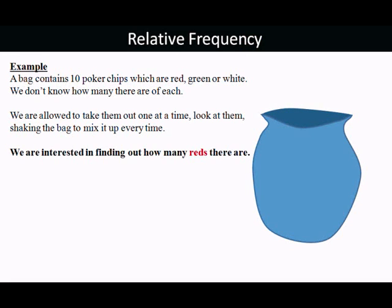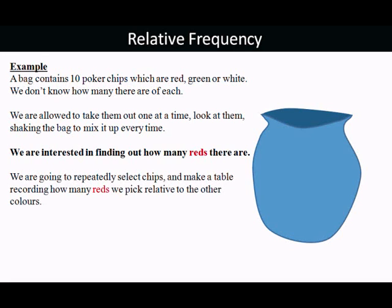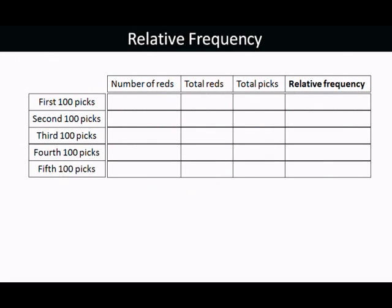And you can gather information that way. So say we're interested in finding out how many reds there are. So you're going to repeatedly select chips and then make a table recording how many reds we pick compared to how many of the other colours. So in the first 100 picks, let's say there were 18 reds. So that makes a total of 18 reds out of 100 picks. So the relative frequency is 18 reds out of 100. 18 over 100 is 0.18.